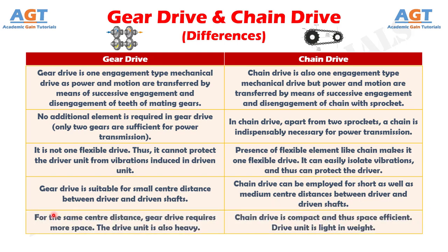Number 5: For the same center distance, gear drive requires more space and the drive unit is also heavy, whereas chain drive is compact and thus space efficient. The drive unit is light in weight.